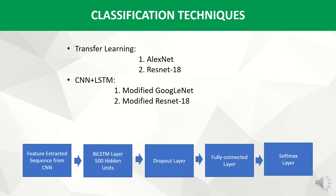For classification we used two different types of techniques: transfer learning and CNN-LSTM. For transfer learning we used LxNet and ResNet-18. For CNN-LSTM, we used modified GoogLeNet and ResNet-18 as the CNN, and our own designed CNN-LSTM. A feature sequence was extracted from the CNN, then given as input to a Bi-LSTM network with 500 hidden units, followed by a dropout layer and a fully connected layer with output size corresponding to the number of classes and a softmax layer. All sequences are partitioned as 80% training data and 20% for testing.